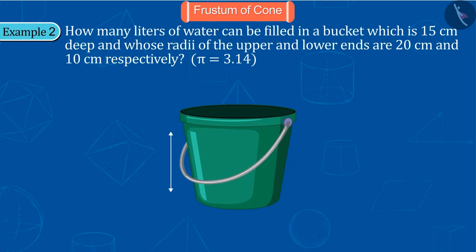A bucket which is 15 centimeters deep and whose radii of the upper and lower ends are 20 centimeters and 10 centimeters respectively. How much water will it hold? From the question we know that the radius of the top of the bucket is 20 centimeters and that of the bottom is 10 centimeters, with depth 15 centimeters. Also, in this question the value of pi is given as 3.14.